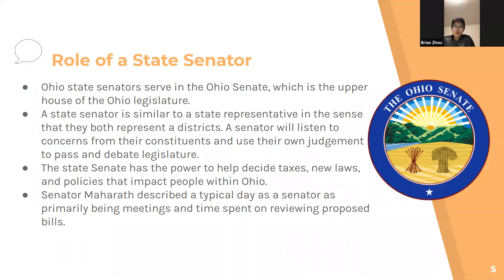On the other hand, we have state senators. State senators work in the Ohio State Senate, which is the upper house of the Ohio legislature. A state senator is pretty similar to a representative in terms of what they do. Both houses typically look over bills, new policies, and work together to pass things such as taxes. A state senator represents the views of his or her constituents in their district. One common misconception is that representatives and senators have the same districts, which they don't — their districts are laid out slightly differently. So you and a friend might have the same state senator but not necessarily the same representative.